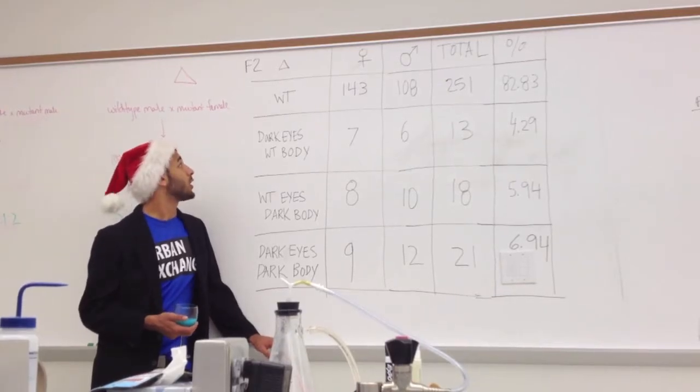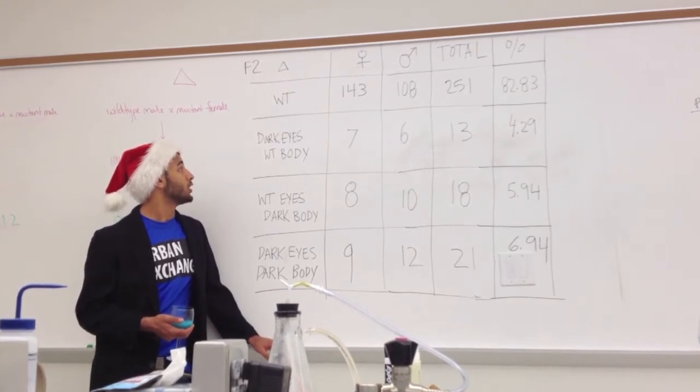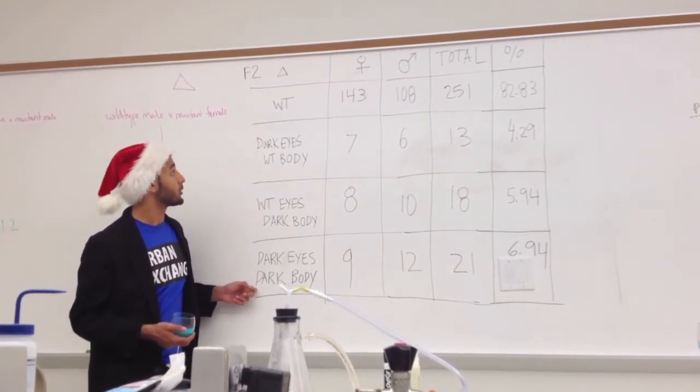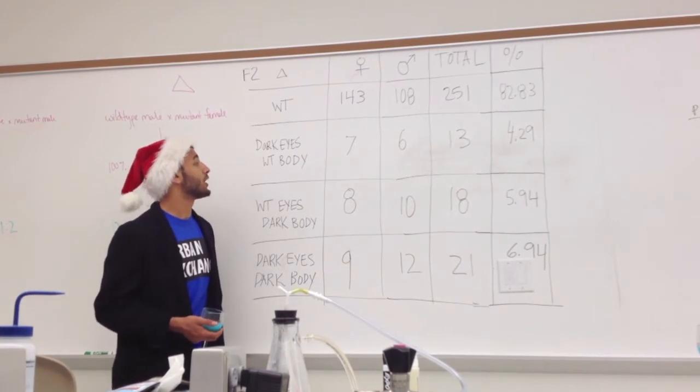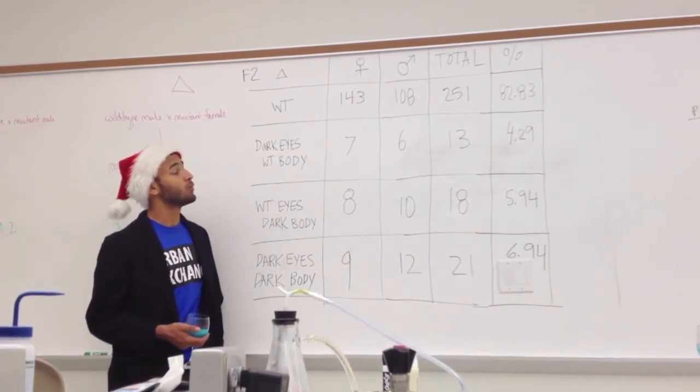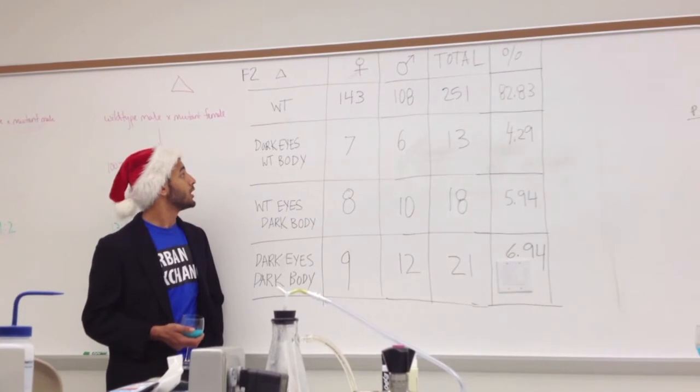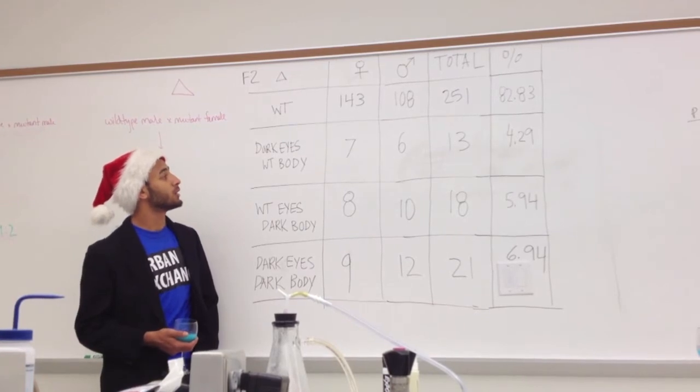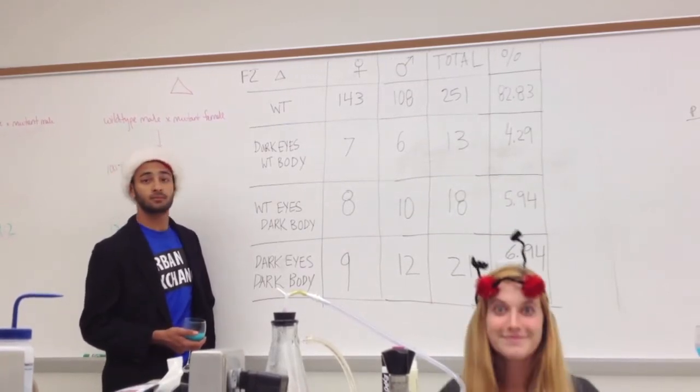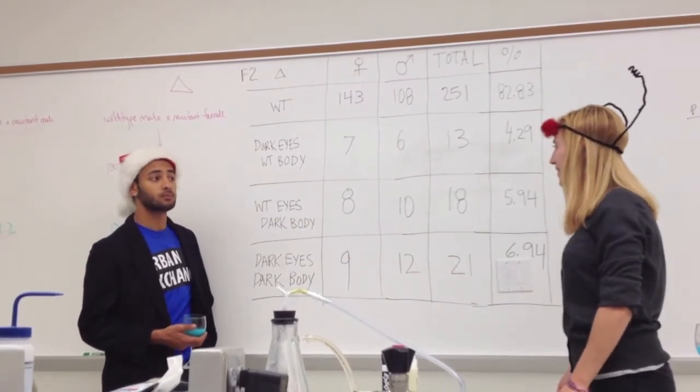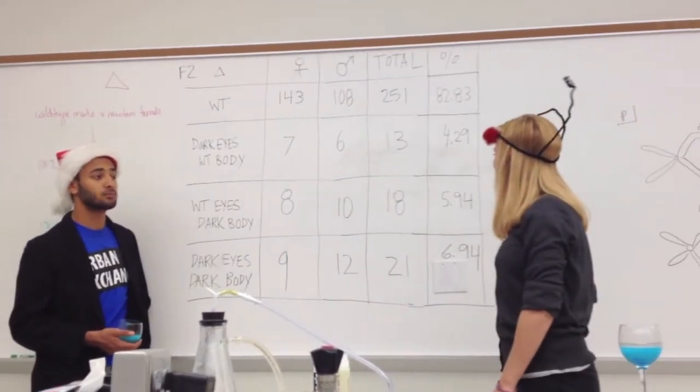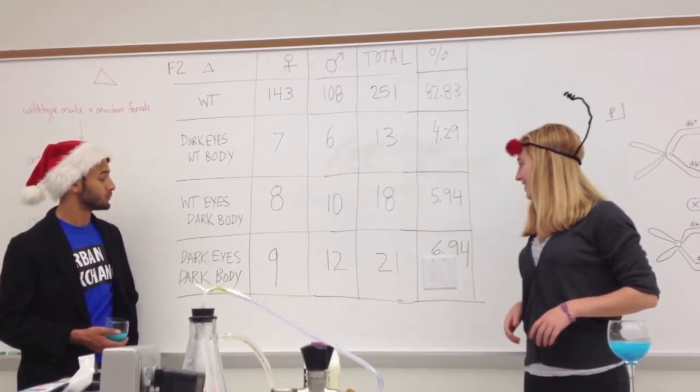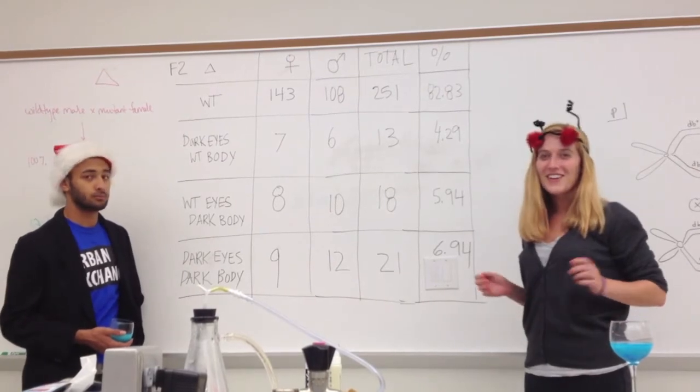For the F2 delta cross, we had 4 phenotypes: wild type, dark eyes with wild type body, wild type eyes with dark body, and dark eyes with dark body. For the wild type phenotype, we had a total of 251 flies with both sexes present. For the dark eyes with wild type body, we had a total of 13 flies, both sexes being present. And for the wild type eyes with dark body, we had 18 total flies, and both sexes were present. And for the dark eyes, dark body, we had 21 total flies, and both sexes were present.